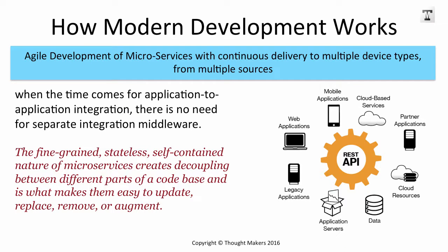So let's have a look at how modern development works. Modern development is the agile development of microservices with continuous delivery to multiple device types from multiple sources. I'm getting information from everywhere — my customer relationship management system, my logistics system, the distribution system. Where are my goods? How does it relate to my order? What's happening to the order I purchased from my supplier? We want to integrate all these multiple sources of information with different device types — essentially machines talking to machines.